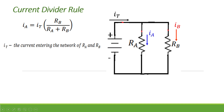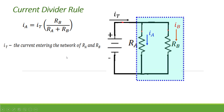Assuming we have a circuit where the total current is entering a node, this current will be divided into I_A — the current flowing in resistor A — and I_B, the current flowing in resistor B. So I_T is not the total current of the whole circuit, but the current entering the network of R_A and R_B. I_T is just a label.